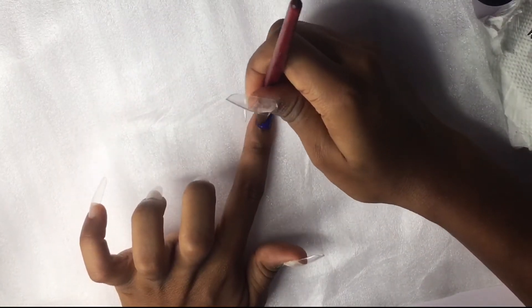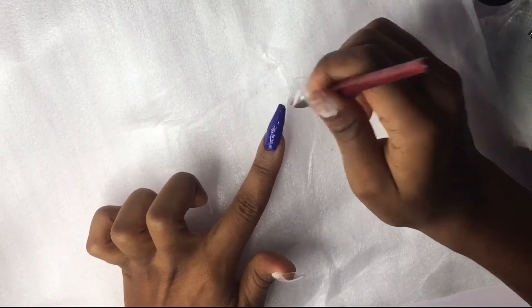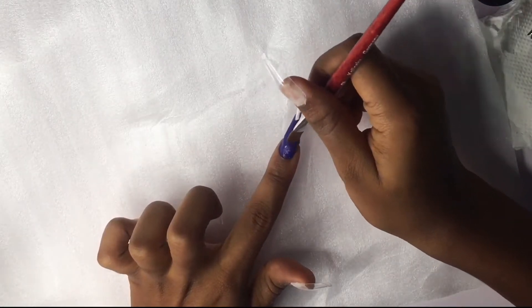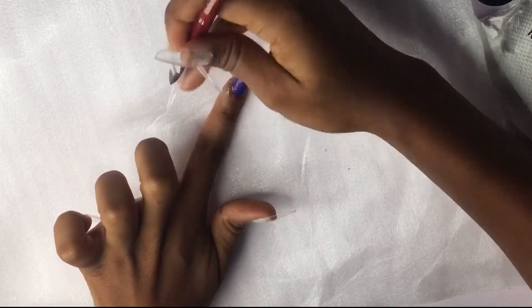As you can see, I'm doing all purple for this nail. Just try to make it as smooth as you can. You are going to go ahead and file it, so just do your best now and leave perfection for the filing.